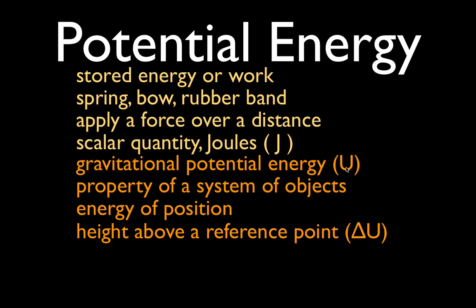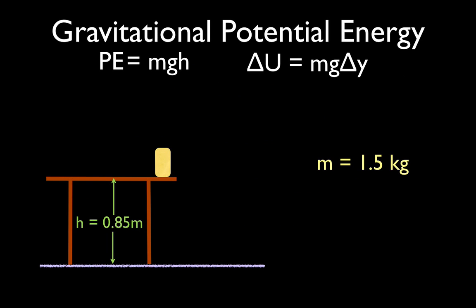The definition for gravitational potential energy is the energy of position. We talk about an object's position relative to the surface of the Earth, or the height above Earth's surface, or some surface like a table, a floor, or the top of a building. We have to have a reference point, because when you calculate potential energy, you're usually calculating the change in potential energy — delta U — not the absolute potential energy, but how much the energy has changed from one location to another. The reference point is usually the place where the object started, and potential energy is not path-dependent.